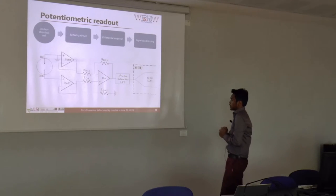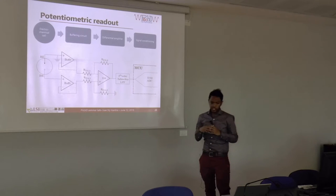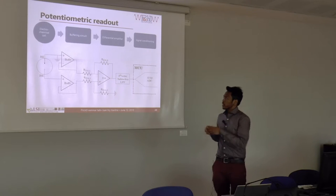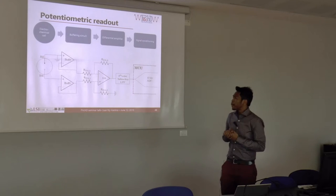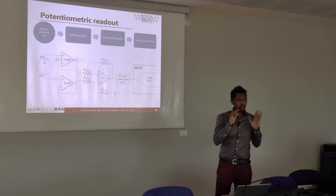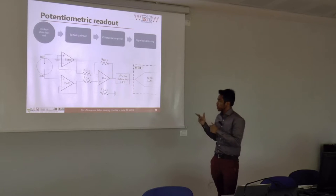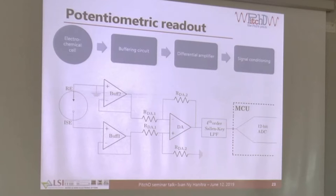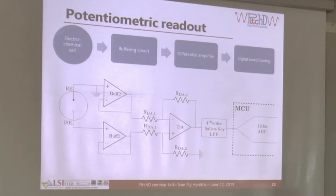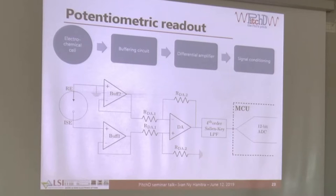The last stage of the amperometric readout block includes filtering and DC adjustment to exploit the full dynamic range of the ADC. For potentiometric measurements, as mentioned, it's an open-circuit measurement technique. We need voltage buffers with very high input impedance — up to picoampere input bias current — so we don't draw current from the cell. Differential measurement is done with a differential amplifier sensing the two potentials, with the ion-selective electrode floating and the reference electrode grounded, followed by filtering before ADC sampling.